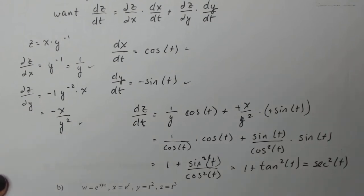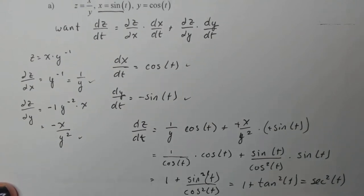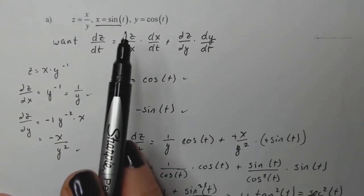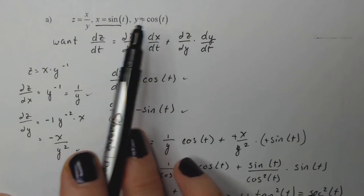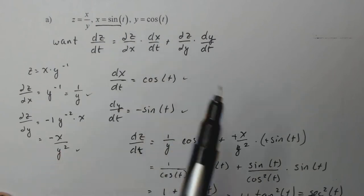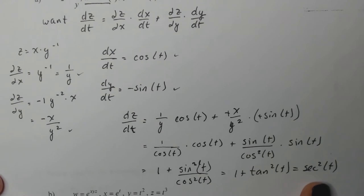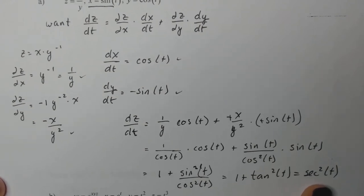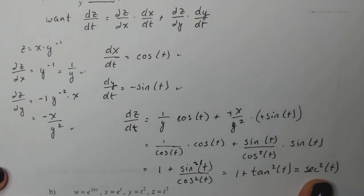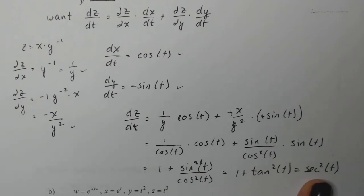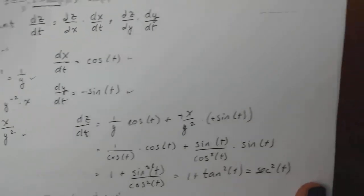And if you know your trig, that's secant squared t. That seems really nice when we think about the beginning: z is x over y, which is sine over cosine, which is tangent. The derivative of tangent is secant squared t. So if we had done it the calc one way, we'd still get secant squared t. We do it the calc three way and get the same thing — it confirms both methods work correctly.